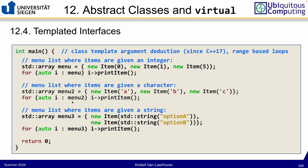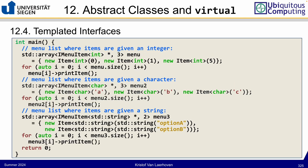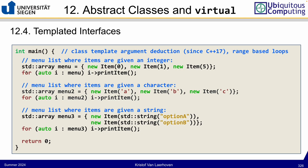Since C++17, template argument deduction means you don't need to explicitly specify the template type in many cases. If the items are integers, C++ deduces the template is 'int'; if characters, it deduces 'char'; if strings, 'string'. This makes code using templated classes significantly shorter and cleaner compared to C++11 or earlier.